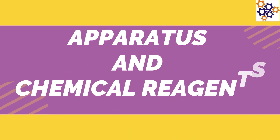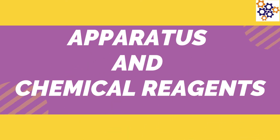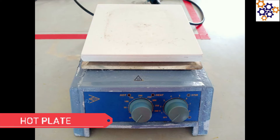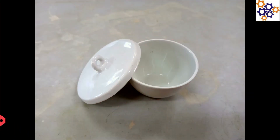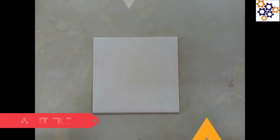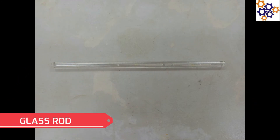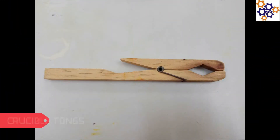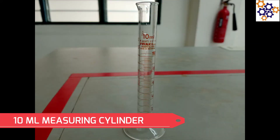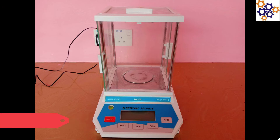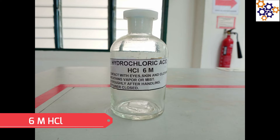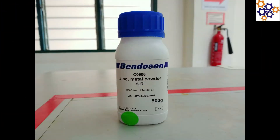The apparatus and chemical reagents that will be used in this experiment are: hot plate, crucible, white tie, glass rod, crucible tongs, 10 ml measuring cylinder, analytical balance, 6 molar hydrochloric acid, and zinc powder.